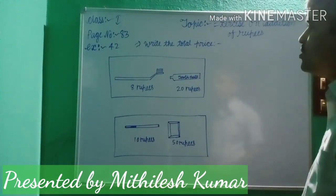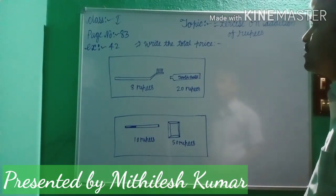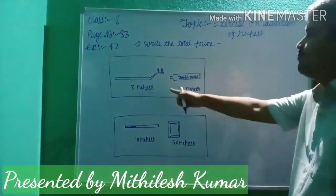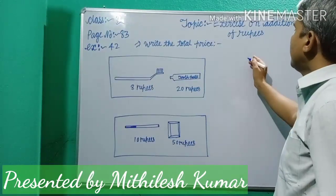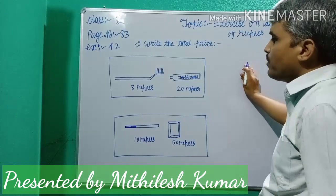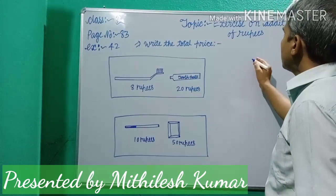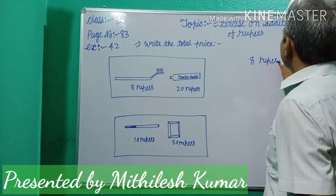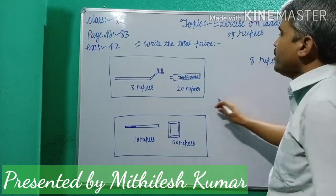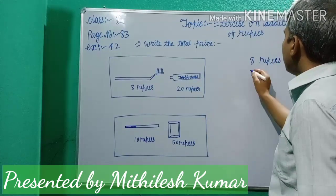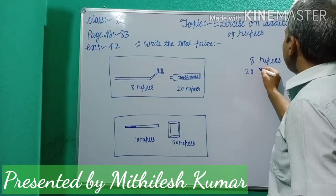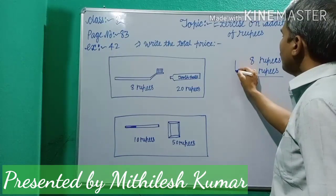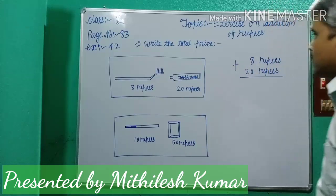First, write down the price of the articles. What is the price of brush? 8 rupees. So you write down 8 rupees. And the price of toothpaste, you write down 20 rupees. Now find the total cost of the articles.